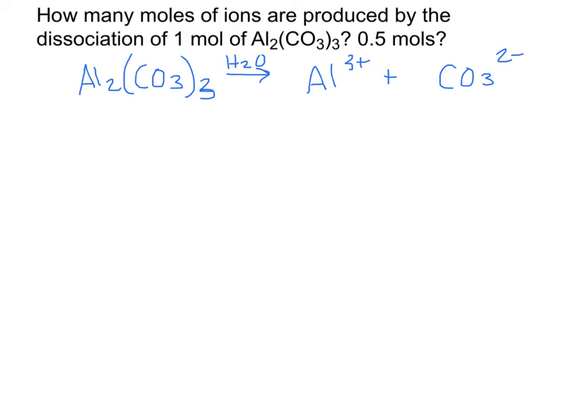What we've commonly referred to as crisscross: aluminum gets the two, carbonate gets the three, and that's how we get aluminum carbonate, Al₂(CO₃)₃.